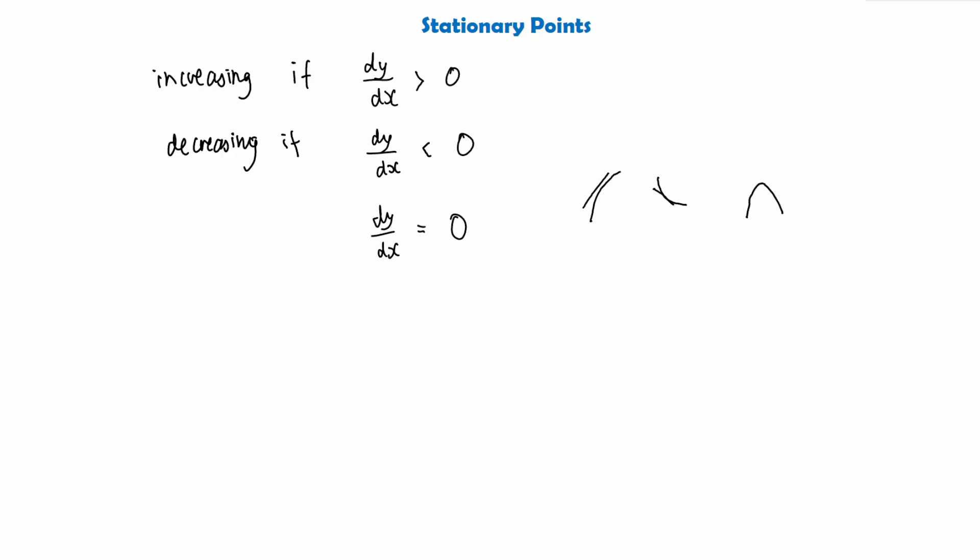Say we have a curve and we have a point here. The tangent at this point is going to be just a straight line parallel to the x-axis. So we can work out stationary points if the derivative of the curve is equal to 0.